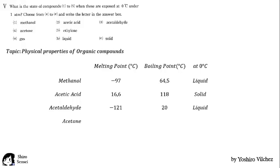For acetone, the melting point is minus 94 and the boiling point is 36, so at 0 degrees Celsius acetone is liquid. For ethylene, the melting point is minus 169 and the boiling point is minus 102, so at 0 degrees Celsius ethylene is a gas.